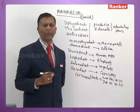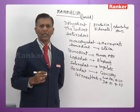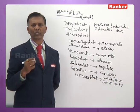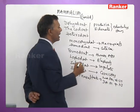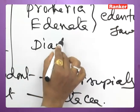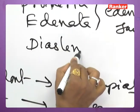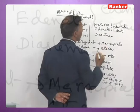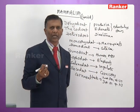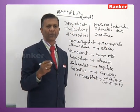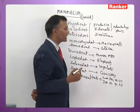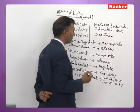In all herbivore mammals, canines are absent. The gap that appears due to the absence of canines is called diastema. For instance, in rabbits, canines are absent and the gap between successive teeth due to their absence is called diastema.